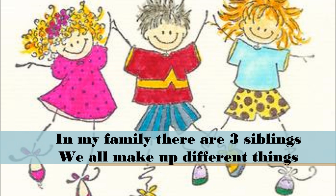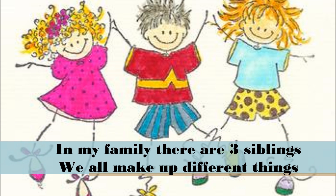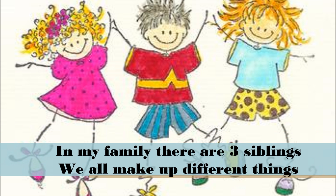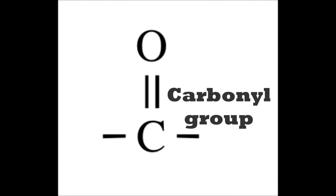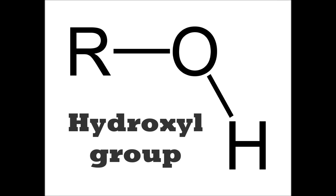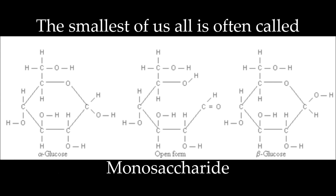In the family, there are three siblings. We all make up different things, but our base is composed of carbonyl and hydroxyl. The smallest of us all is often called monosaccharide — he forms a linear chain when he is dry, and he forms rings when he's dissolved in water.